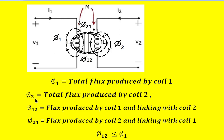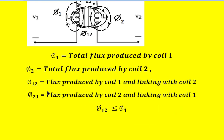Phi2 is the coil 2 flux. Phi12 is the flux produced by coil 1 but also linking with coil 2. Similarly, phi21 is the flux produced by coil 2 but also linking with coil 1. This linking flux with the other coil is always less than or equal to the original flux — phi12 is always less than or equal to phi1.